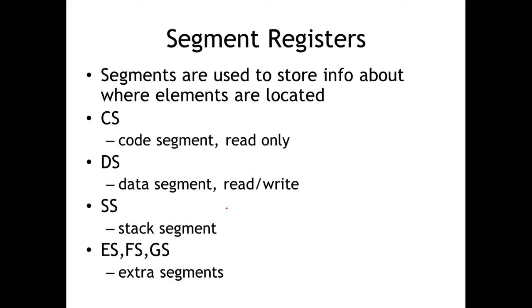Segment registers — we probably won't do a whole lot with those, but let's touch on them. They're segments that store information about where elements are located. The code segment is typically read-only — that's the code of our program, the instructions to be fetched and executed, and we don't want to modify that. The data segment is typically read-write because it's the segment for our variables, and variable values change throughout execution. Keeping these segmented is important for security — we don't want the code and data to intermix because we don't want to allow the program's code to change. We also have the stack segment — the area responsible for the stack — which is a key thing to understand throughout the course.